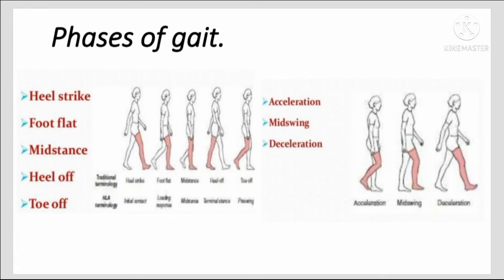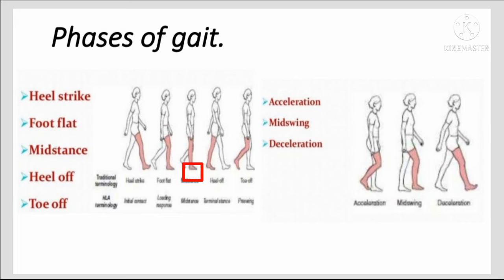Now let us understand with the help of this picture. Heel strike: when the heel comes in contact with the ground. Foot flat: when the sole of the foot is in contact with the ground. Mid-stance: when the body passes over the reference extremity. Heel off: when the heel of the reference extremity is off the ground. Toe off: when the toe of the reference extremity is off the ground.